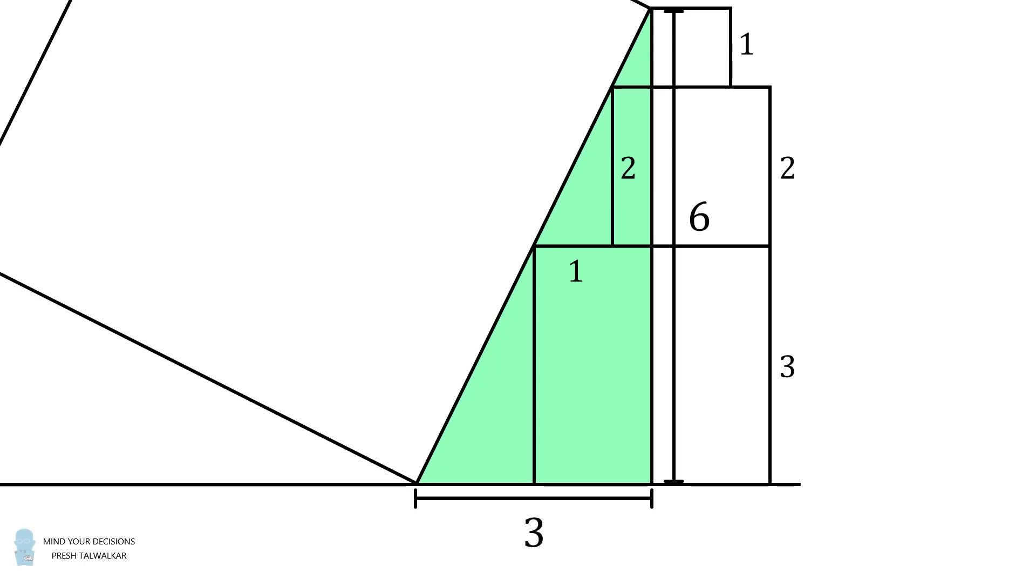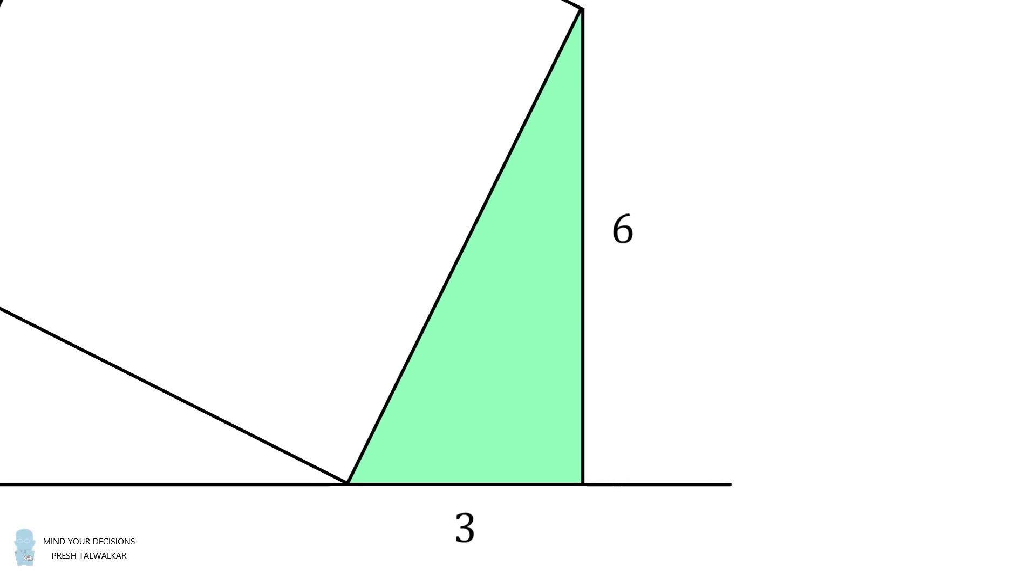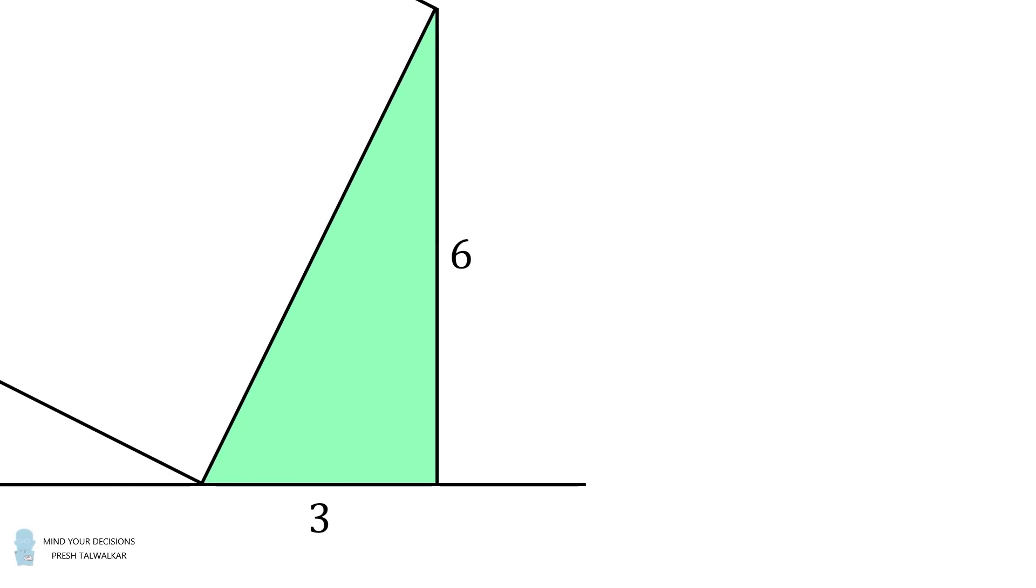Let's now focus on just this right triangle. We know its legs are equal to 6 and 3, and its hypotenuse is equal to x. X is also the side length of the square. The area of the square is equal to x squared, and that's equal to 3 squared plus 6 squared. Thus, x squared equals 45, and that's the answer.